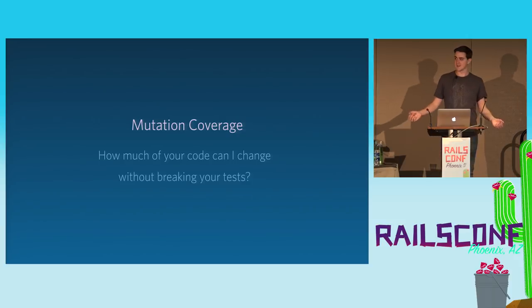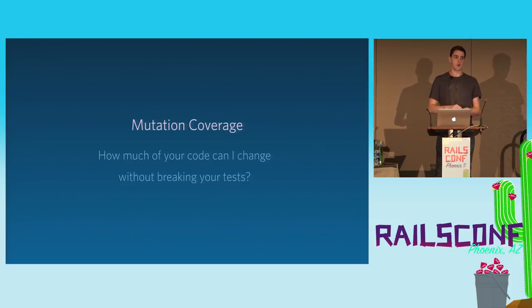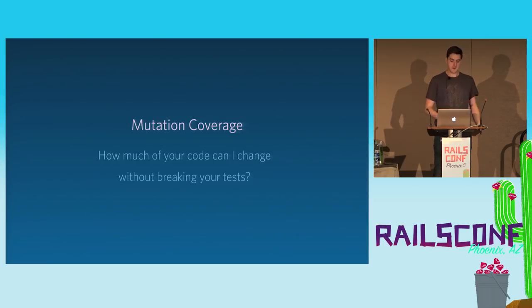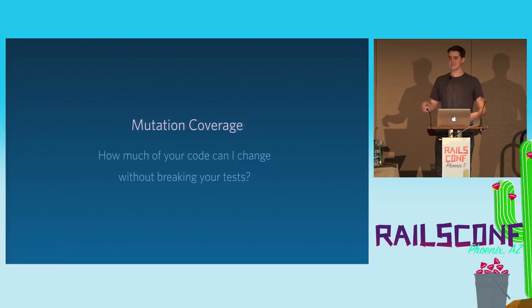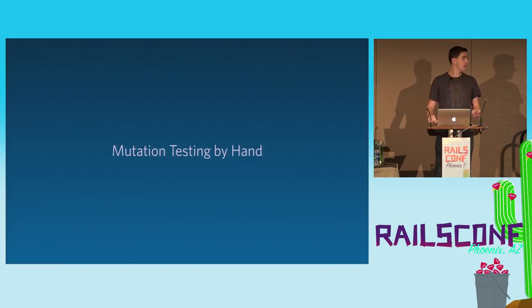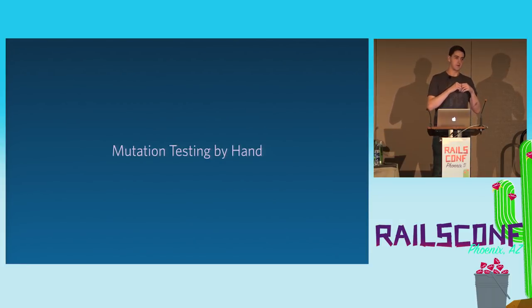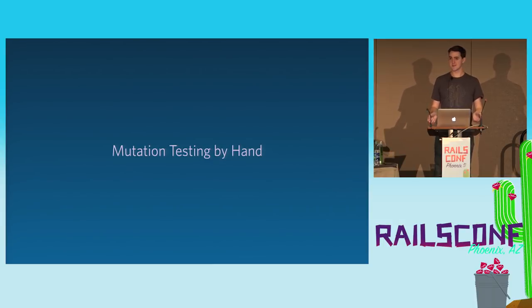If you think about it, this makes sense. If I can remove a line of code or meaningfully modify a line of code in your project without breaking your tests, then something's probably wrong — you're either missing a test or that code is dead. Before we dive into how to do mutation testing automatically with a tool, I want to give you a good intuition of what mutation testing is by doing it by hand.